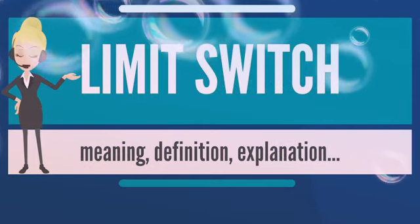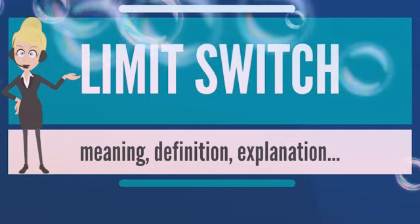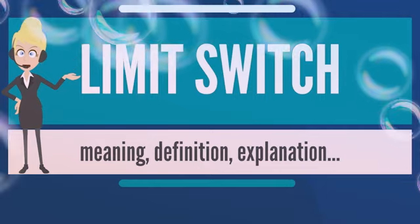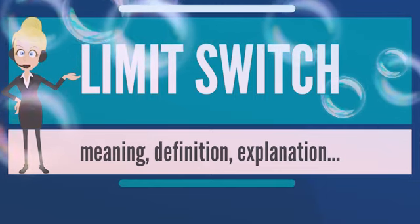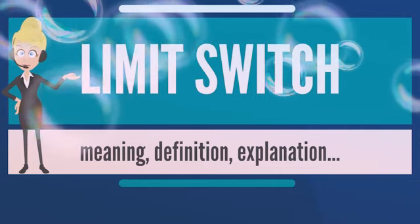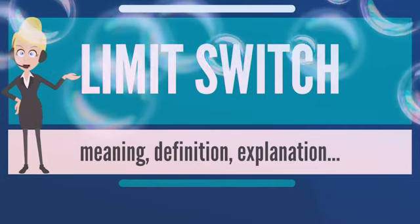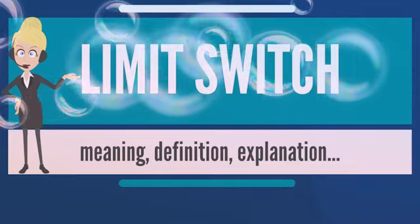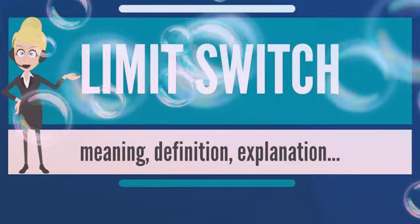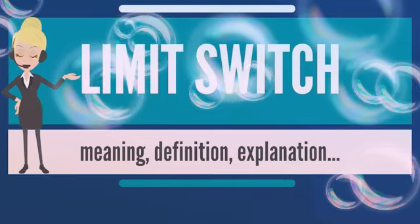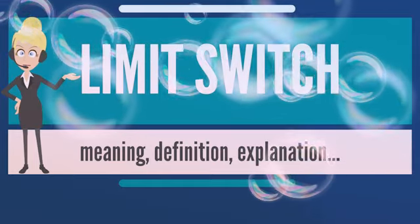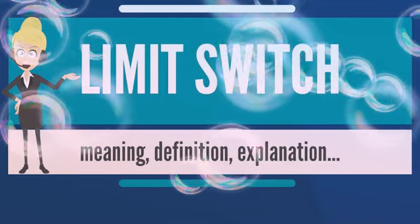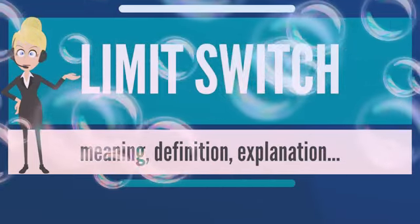They can determine the presence or absence, passing, positioning, and end of travel of an object. They were first used to define the limit of travel of an object — hence the name limit switch.